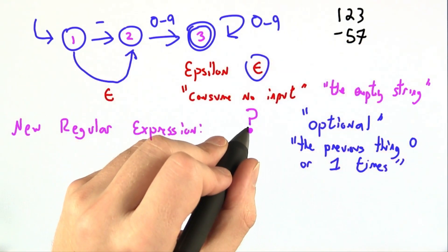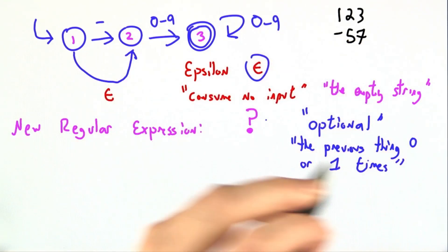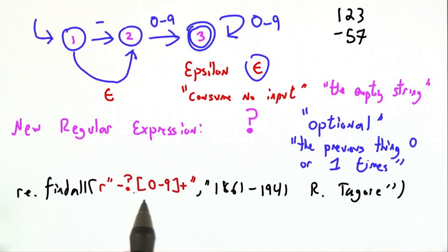In that way it's a lot like plus, which was the previous thing 1 or more times. So I might write a regular expression that accepts numbers that may optionally have a leading negative sign. This negative sign may be present 1 time or 0 times. It can be there or not. We definitely need the 0 through 9 plus.